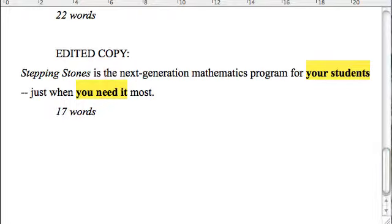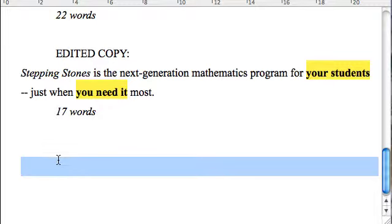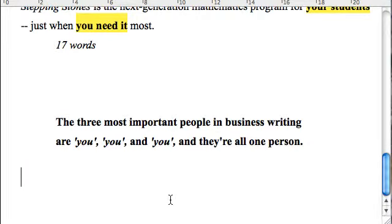And there you have the you rule. In business writing, you is always singular. And another way of saying this is the three most important people in business writing are you, you, and you. And they are all one person.